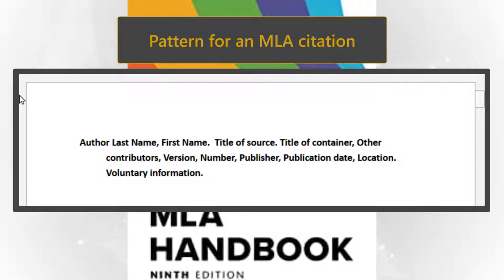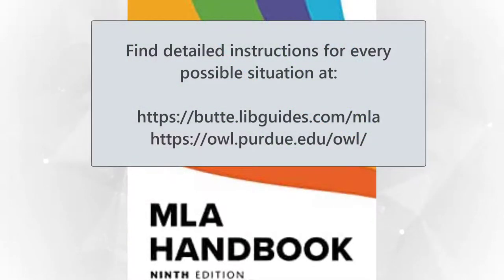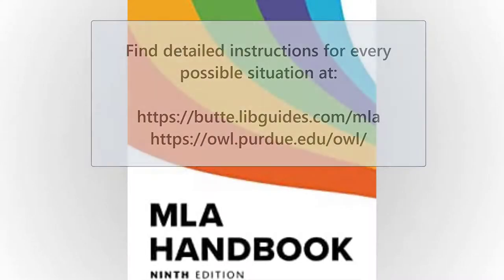The idea is to make it easy for a reader to find the source, so you'll want to include any special information and be specific. If you only used one chapter in a book, it's good to say so. The details of writing full citations for every kind of source are much too complex to go into in a short video, and it's all explained fully in our MLA Guide or the Purdue Online Writing Lab.